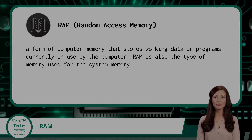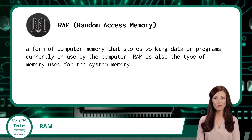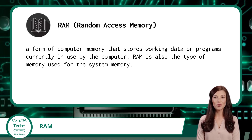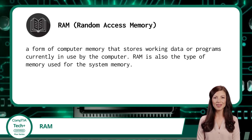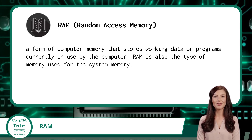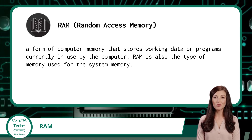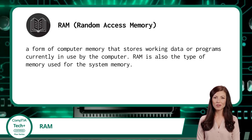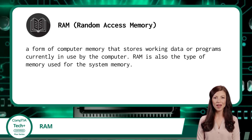RAM, or Random Access Memory, is a form of computer memory that stores working data or programs currently in use by a computer. RAM is also the type of memory used for the system memory of most computing devices. In case you forgot, I introduced you to the topic of system memory back in exam objective 1.1, and to avoid confusion, just think of RAM and system memory as interchangeable, at least for now.